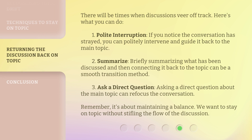There will be times when discussions veer off track. Here's what you can do. First, polite interruption: if you notice the conversation has strayed, you can politely intervene and guide it back to the main topic. Second, summarize: briefly summarizing what has been discussed and then connecting it back to the topic can be a smooth transition method. Third, ask a direct question about the main topic to refocus the conversation. Remember, it's about maintaining a balance — we want to stay on topic without stifling the flow of the discussion.